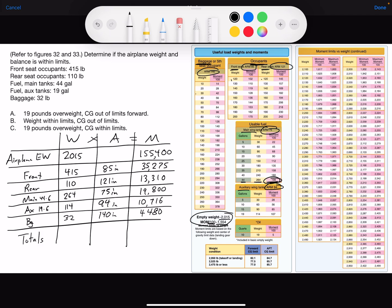The next step would be to total the moment and total the weight. And if you do that, you should get a total weight of 2,950 and a moment of 238,981.